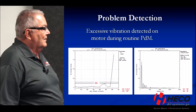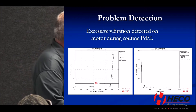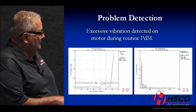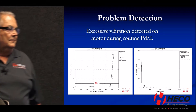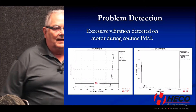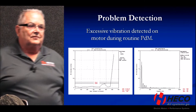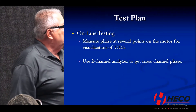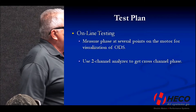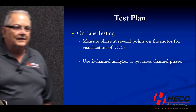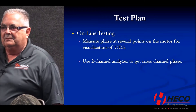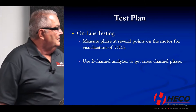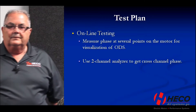We came in and took some vibration spectral readings. There was one times, two, three, four — a whole bunch of harmonics. One times was predominant, but it almost looked like a looseness-type situation when you see those multiple peaks. As part of our test plan, the first thing was we needed to call somebody from the plant because I didn't want to leave them running at 1.4 inches per second.